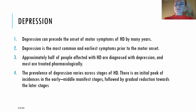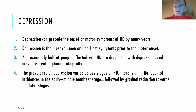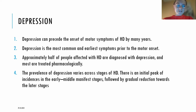Apathy is related to depression, which is the most important differential diagnosis. Depression can precede the onset of motor symptoms by many years or even decades, and it is the most common prodromal symptom prior to motor onset — truly a clinical biomarker. Approximately half of people with Huntington's disease are diagnosed with depression, and the majority are treated pharmacologically.